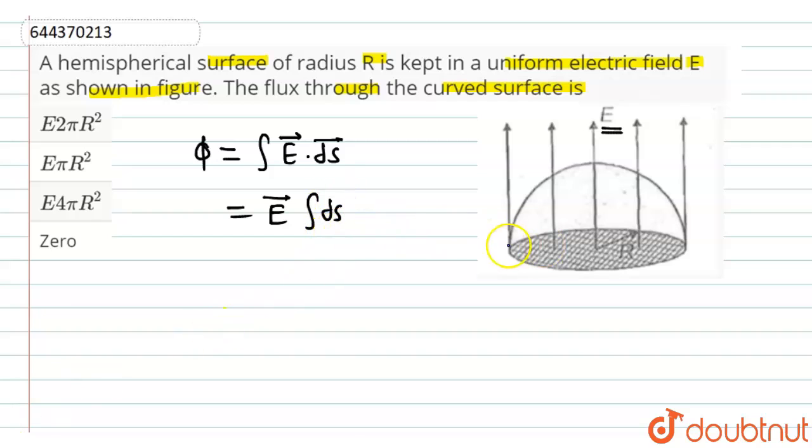This ds is the area of this flat surface and the flat surface is circular so its area will be equal to πR². If capital R is the radius, then by putting this value we get E⃗ into πR².